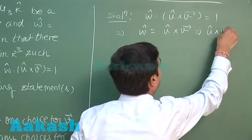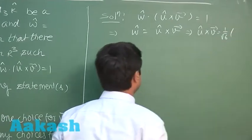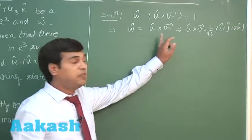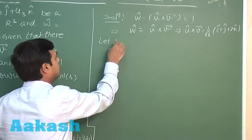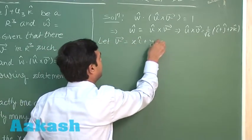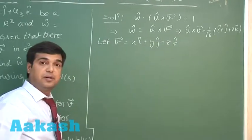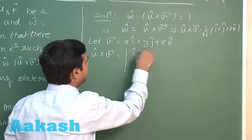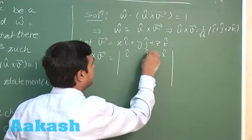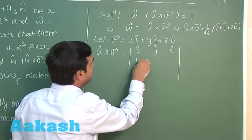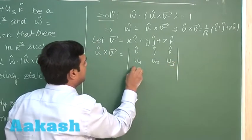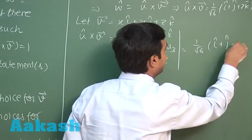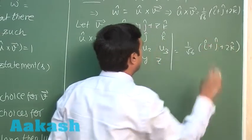From here we obtain: u-cap × v = (1/√6)(i + j + 2k). Let's assume v = x·i + y·j + z·k. So from here we can compute u × v as the determinant with rows [i, j, k], [u1, u2, u3], [x, y, z], and this equals (1/√6)·i + (1/√6)·j + (2/√6)·k.